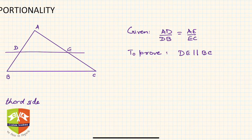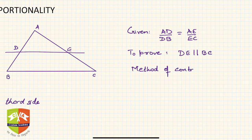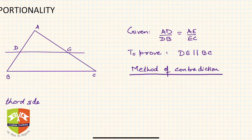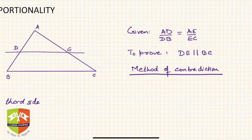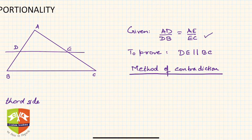To prove this, we will use the method of contradiction. Method of contradiction means that you assume whatever is to be proven is not correct — that it is wrong — and then with logic you prove that your initial assumption itself was wrong, and hence the result follows. So in this question, we need to prove DE is parallel to BC given AD/DB = AE/EC.